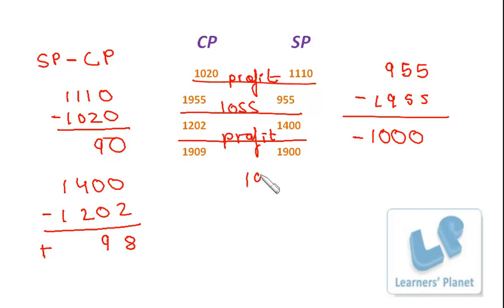Now, the last one which is 1900 minus 1909. Now, over here, we have negative 9. So, we have a loss over here. So, this was really very easy. These sums were also very simple. These were just the basic sums. And I hope that you understood this.